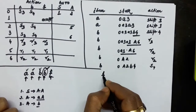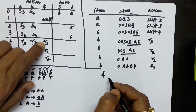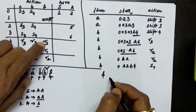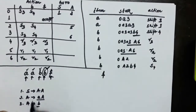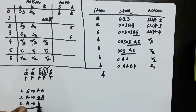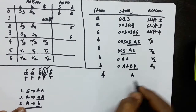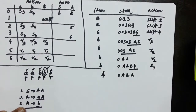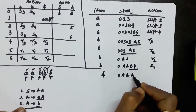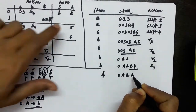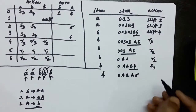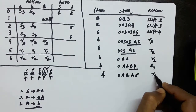The next symbol in the input string is dollar. State 4 on dollar suggests R3 — reduce by production rule 3, which converts b to capital A. So the top two symbols of the stack are replaced by capital A; the rest remain. State 2 on capital A suggests going to state 5. The rule applied is R3.